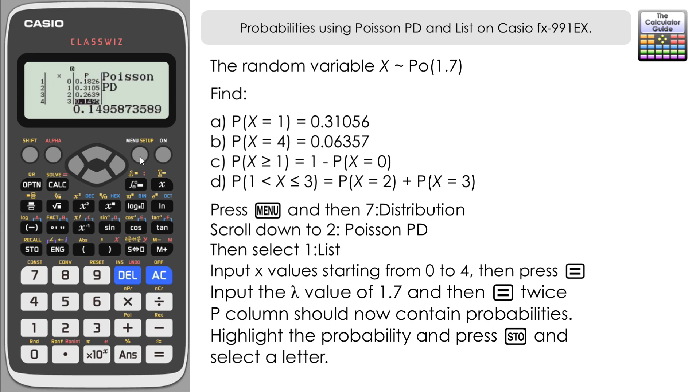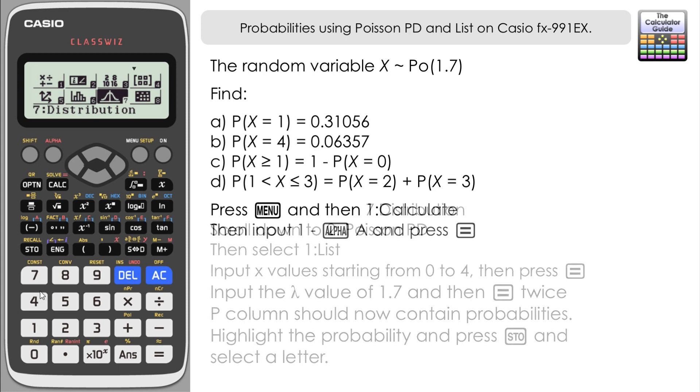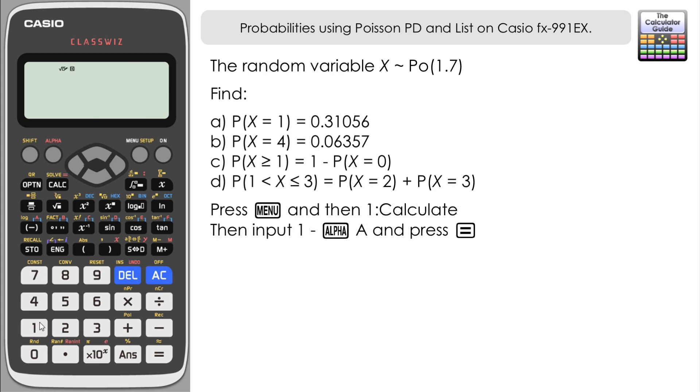Let's press menu and go to calculate. You can just press 1 to go to calculate mode. Let's answer part c first. We have the probability of X equaling 0 stored in memory A: 1 minus alpha A equals, and here we have our answer to part c: 0.8173 to four decimal places.